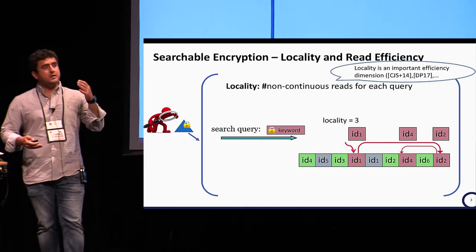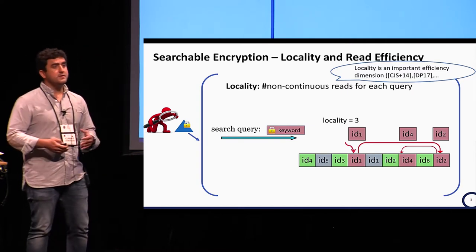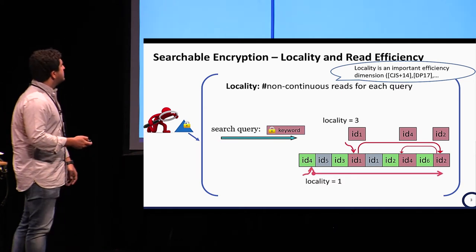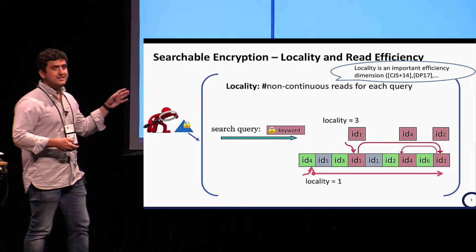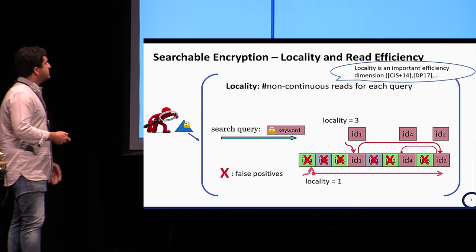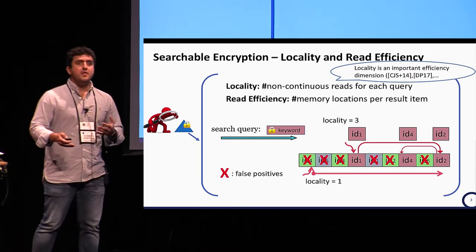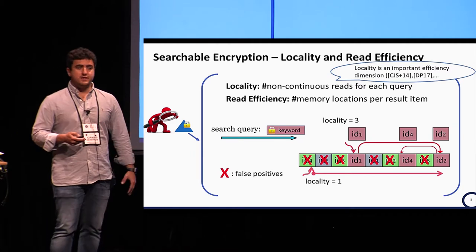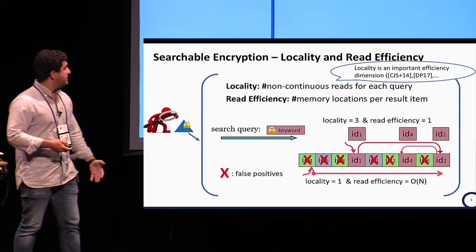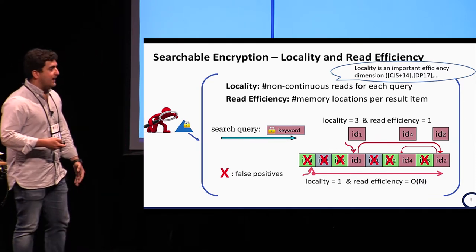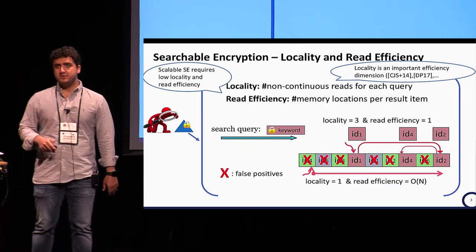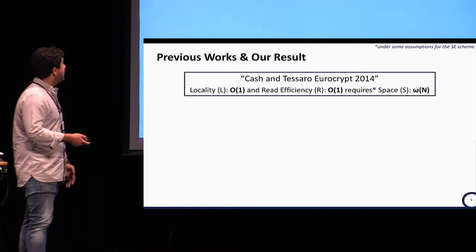Why do we care about locality? According to the literature, locality is a very important efficiency dimension, especially for scaling searchable encryption to big data. The problem is that we can achieve optimal locality just by reading the entire index every time, which is not efficient. This is why we need to define another metric called read efficiency: the number of memory locations read per result item. Ideally, for scalable solutions we need to keep both locality and read efficiency as low as possible.